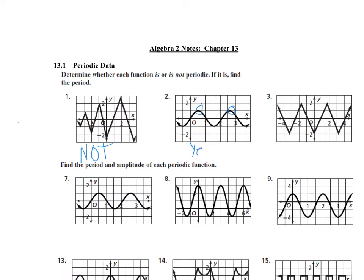So yes, this one's periodic, and the period is roughly — this is a half, this is two and a half — so the period is approximately two. The period goes from one part to the next repeating part. You could also judge the period from here to here, or from here to here. There are different ways to identify the period.